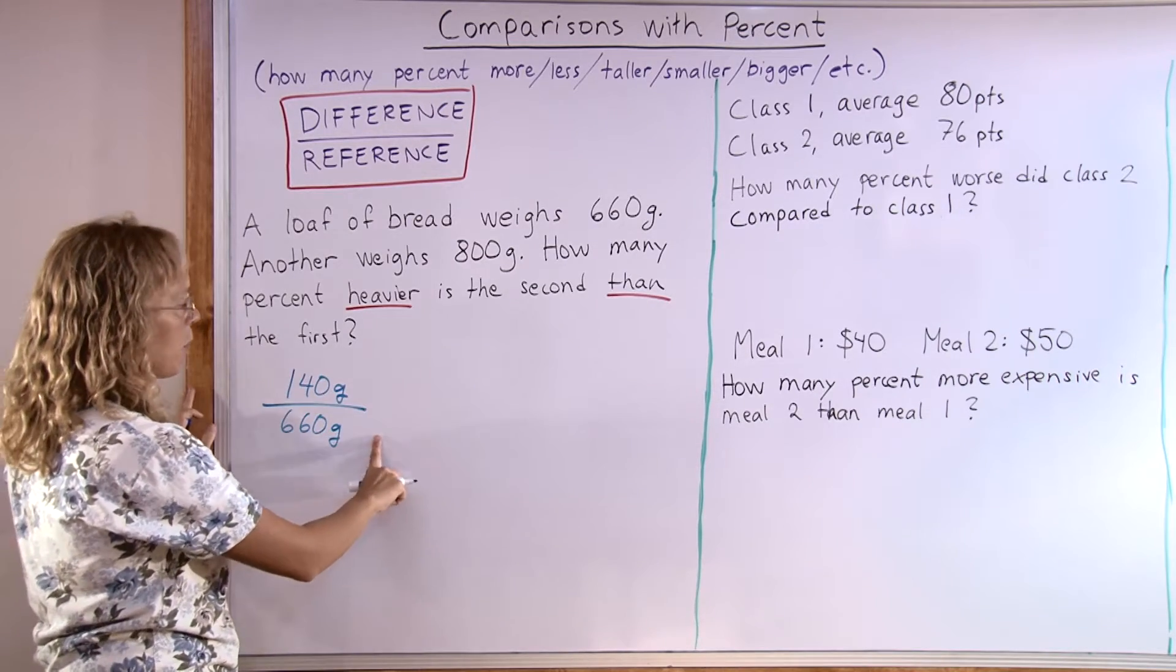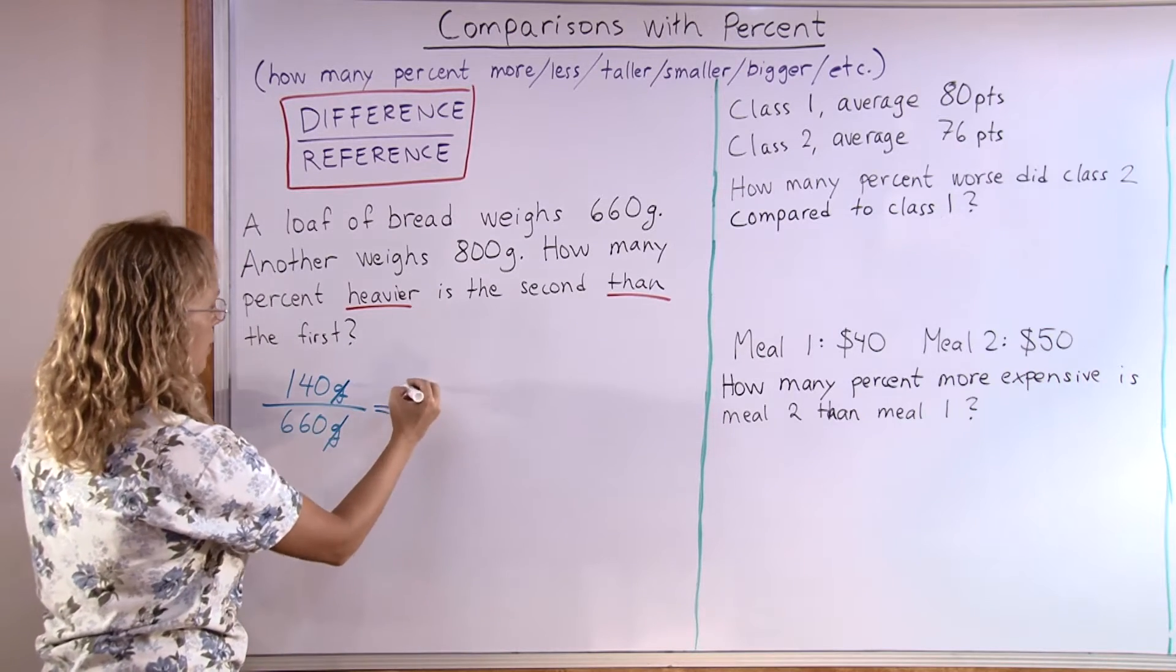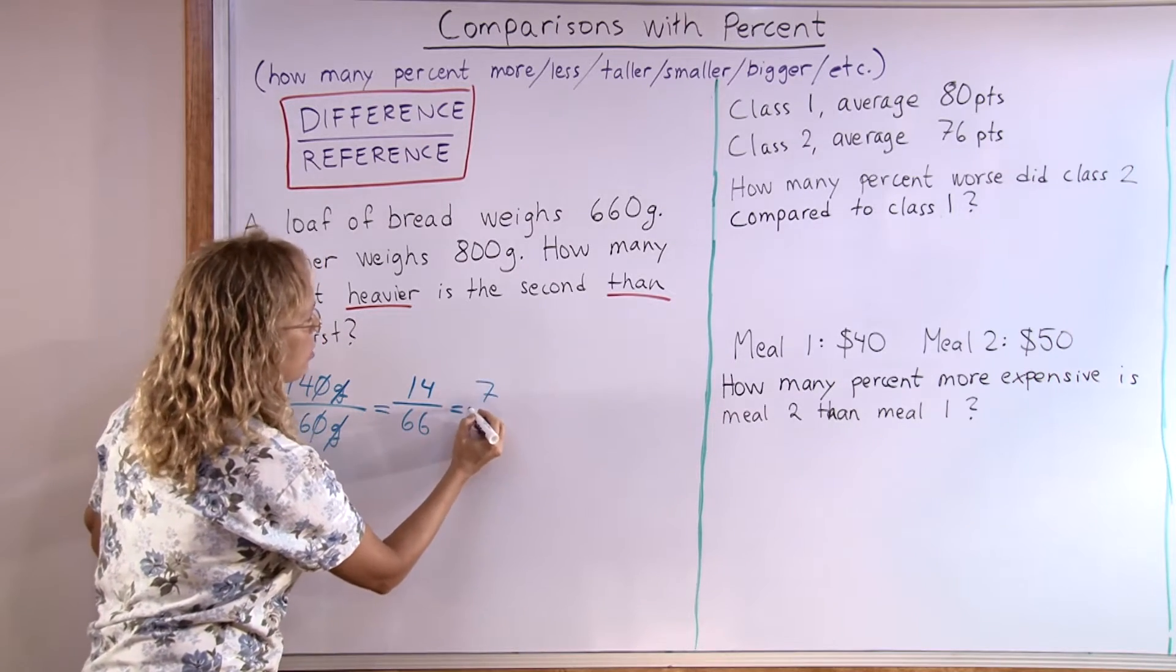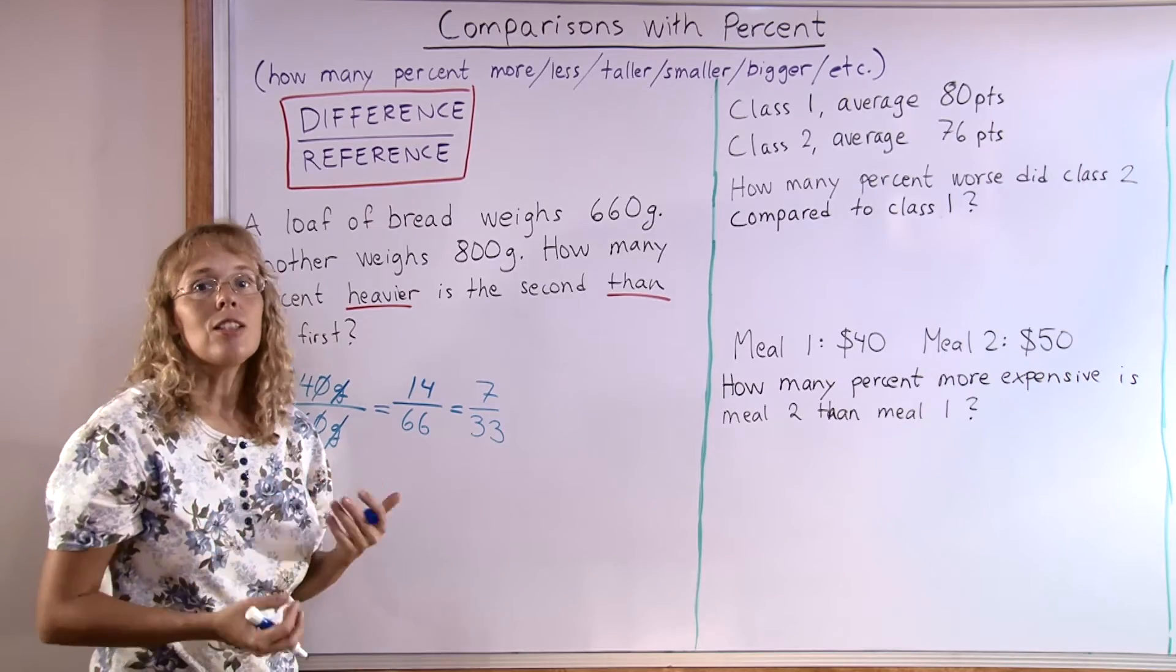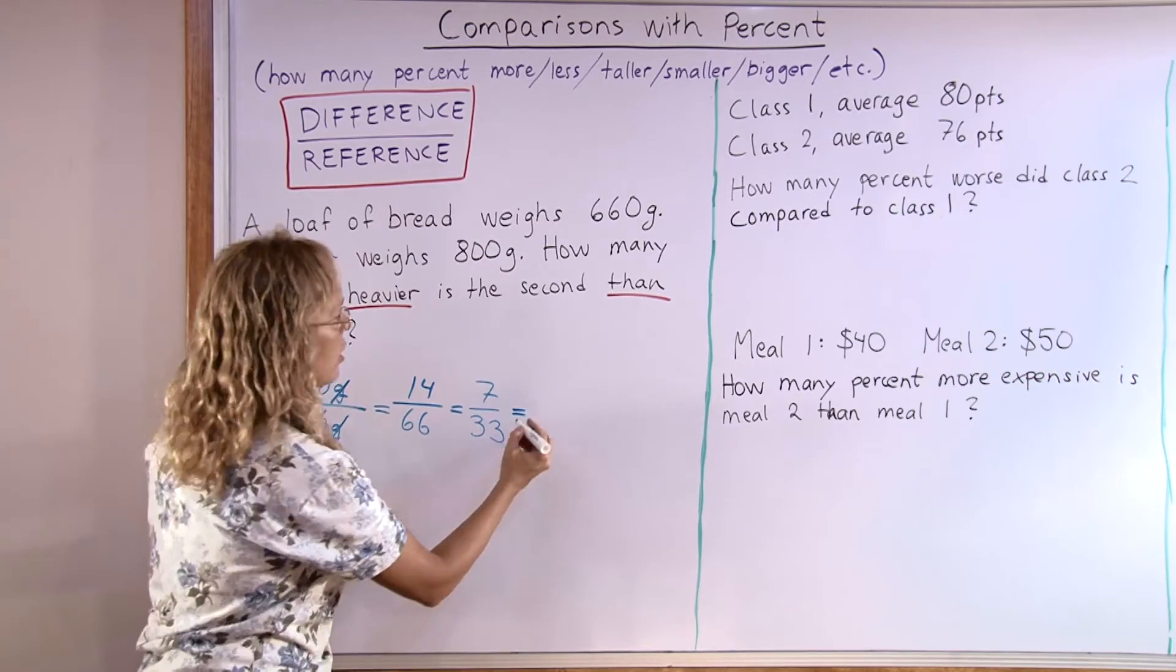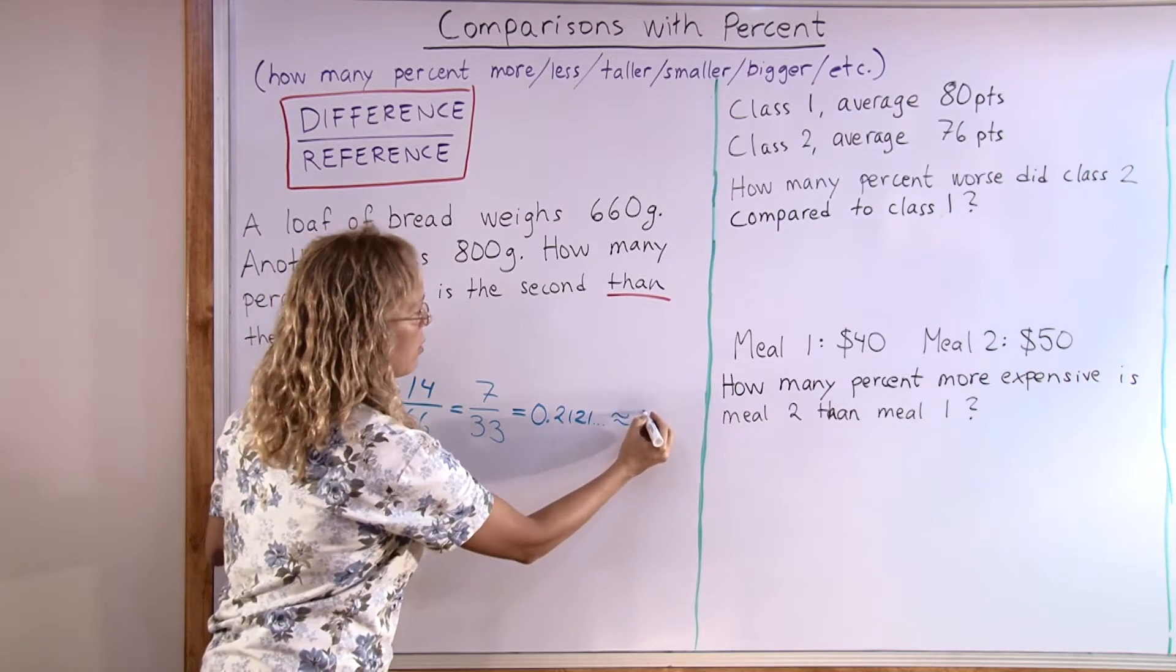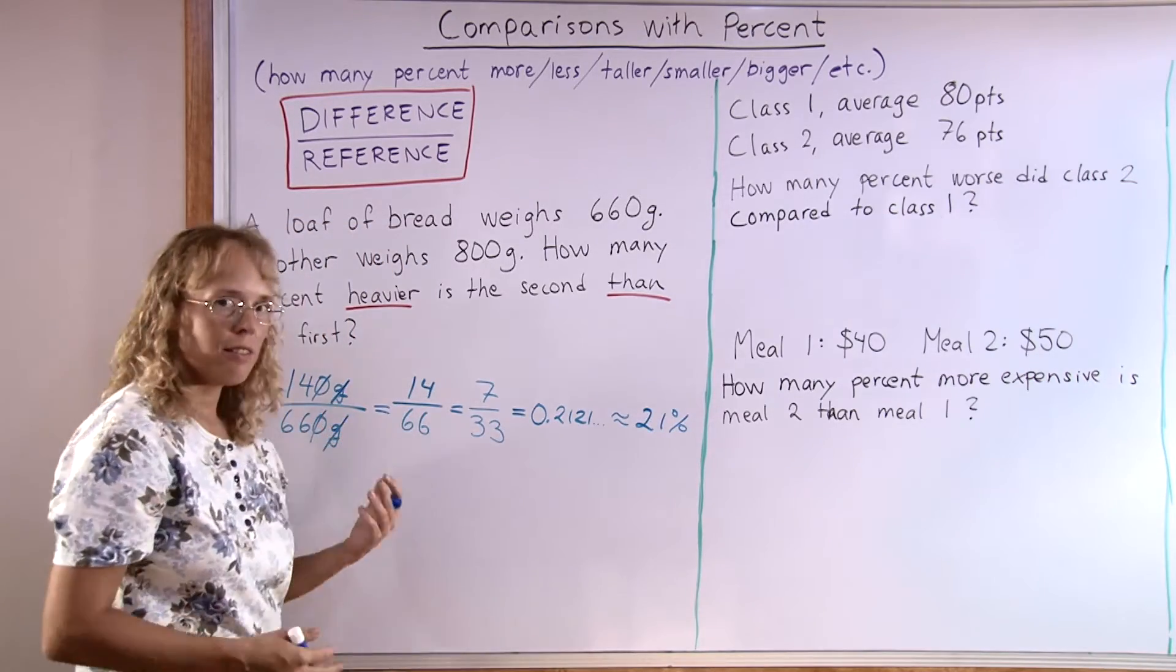This is a fraction, but we will just write it as a decimal and then as a percent. First of all, all these grams will cancel and the zeros, so I get 14 over 66, which I can simplify to 7 over 33. Now this fraction won't simplify. You will then use a calculator or divide using long division to get the decimal number. I got 0.2121 and it repeats the 21. So now round it to about 21%. So the heavier bread is about 21% heavier than the first one.